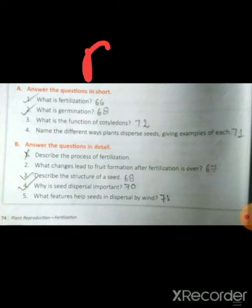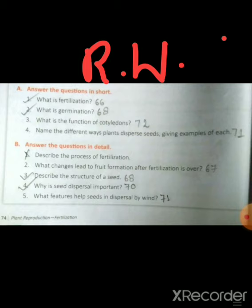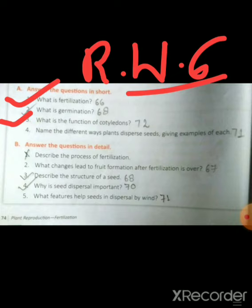Now we will talk about RW6. RW6 is answer the following questions in short. Children, this is chapter 5. What is fertilization? What is germination? These are two questions. Describe the structure of a seed. Next is why seed dispersal is important. These are two questions.